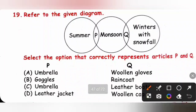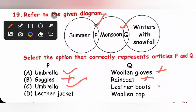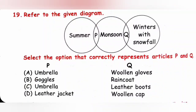Question 19: Identify articles P and Q from the diagram. P is used during summer and monsoon — umbrella fits both. Q is used in both monsoon and winters with snowfall — leather boots fit both. Woolen gloves are only for winters; goggles and leather jackets don't fit both seasons. So P is umbrella and Q is leather boots. Option C is the correct answer.